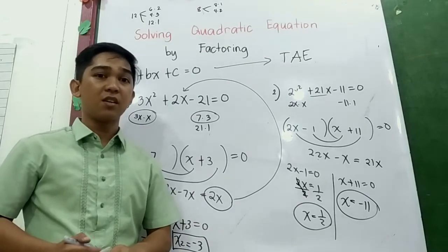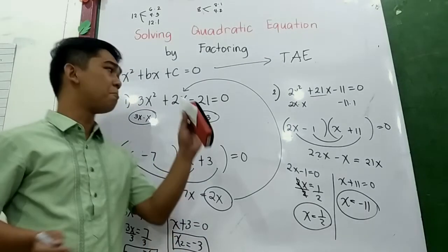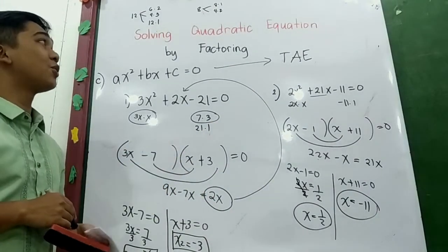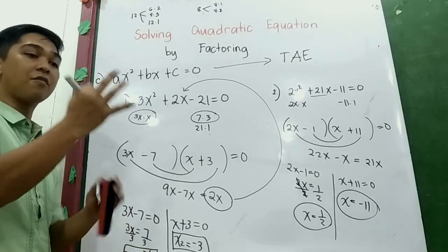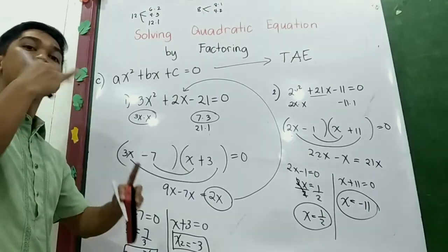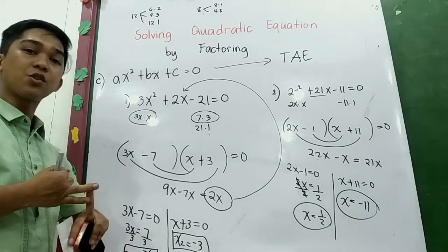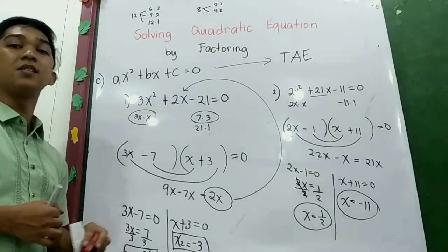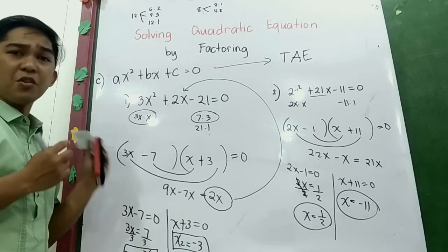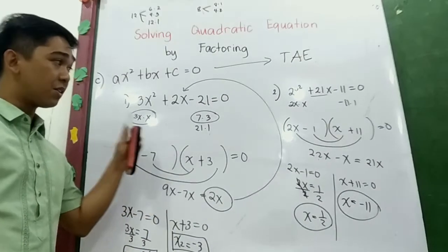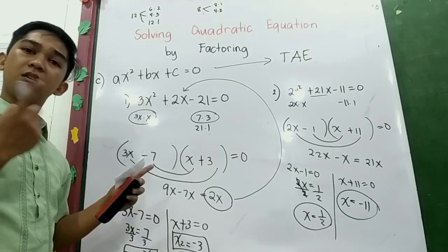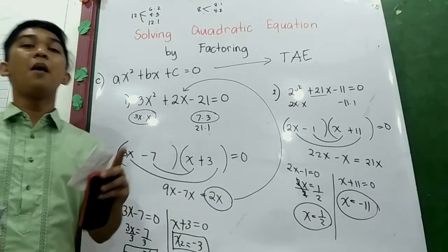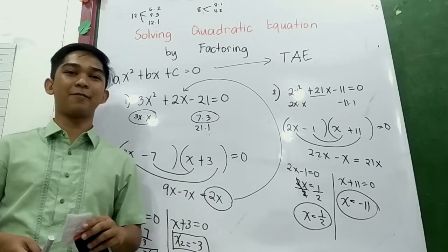That concludes our lesson. You can search the internet for more practice questions so you can master solving quadratic equations by factoring. There are three methods: GCF, factoring in the form of x² + bx + c = 0, and factoring in the form of ax² + bx + c = 0. Thank you for watching and I hope you learned something. Stay tuned for the next lesson: solving the quadratic equation by completing the square.